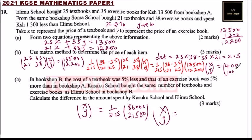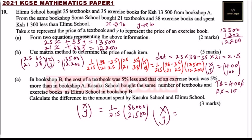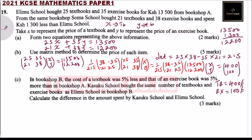So this means the textbook was costing 400 shillings and the exercise book was costing 100 shillings. That's how you solve it — there is a lot of computation here, but you need to remember how to multiply matrices, which you learned in Form 3.